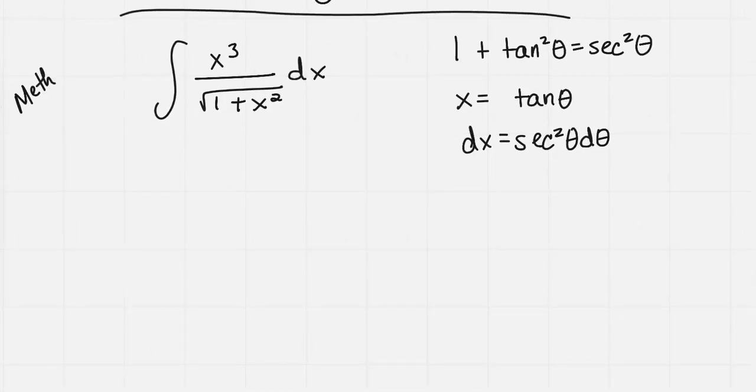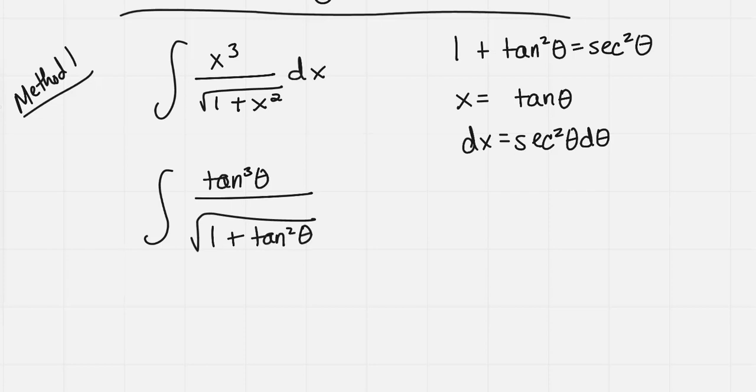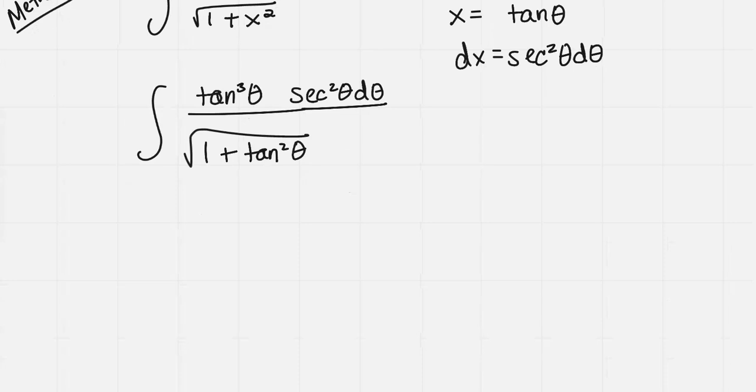Let me label this as method one. So when I make those substitutions, it becomes the integral of tan cubed theta all over the square root of 1 plus tan squared theta, and then my dx became secant squared theta d theta. I'm going to do a little scratch work. The square root of 1 plus tan squared theta would be equal to the square root of secant squared theta, and the square root of that would thus be secant theta.